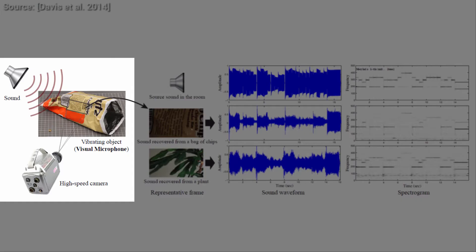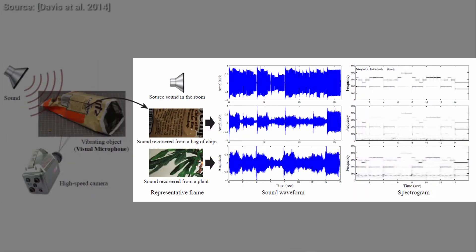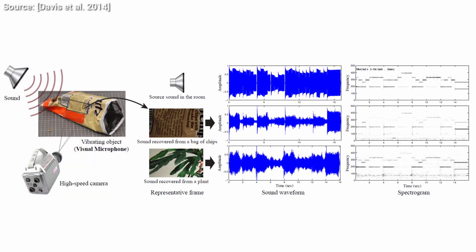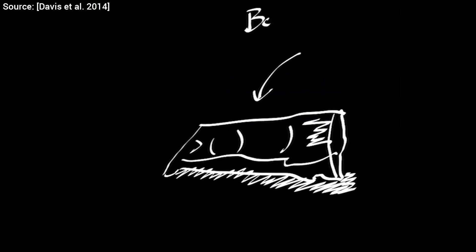Now hold on to your chairs, because this algorithm can reconstruct audio data from video footage of vibrations. What this means is that if someone outside of your house pointed a high-speed camera at a bag of chips when you start talking in your room, he will be able to guess what you said by only seeing the vibrations of the bag of chips.